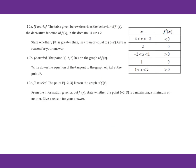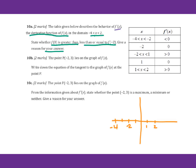Go to 10a. The table given below describes the behavior of f prime of x. We know f prime of x is the derivative function of f of x in the domain x between negative 4 and negative 2. Let's try to sketch the graph. For x between negative 4 and negative 2, the derivative is less than 0, which means the graph is decreasing. Let's draw like this. Then at x equals negative 2 the derivative equals 0 — this could be a minimum, maximum, or stationary inflection point.